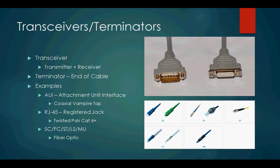A bit of terminology. Whenever I refer to transceivers or terminators, I am referring to the transmitter/receiver. These are the cable enders — the terminator is the end of the cable; it could be male or female. Some examples: we have the AUI, which looks almost like serial. Fiber optics use these. There's also RJ45, which is used for twisted pairs or Ethernet cables, and these are what you commonly see connected to computers.